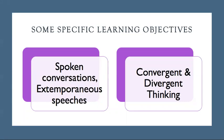Beyond the general outcomes previously mentioned, there are also specific learning objectives that need to be considered. For example, foreign language teachers frequently require students to be able to converse in the target language, while communication studies teachers often have extemporaneous speech objectives. These are two examples of things that simply can't be taught or assessed in an asynchronous environment. Other classes may have learning objectives related to convergent or divergent thinking skills. Brainstorming, for example, is a divergent thinking skill that is best addressed synchronously, at least at first. Convergent thinking, on the other hand, is best done in an asynchronous environment. These are just a few examples to demonstrate that the learning objectives must be kept in mind when deciding whether to use synchronous or asynchronous strategies.